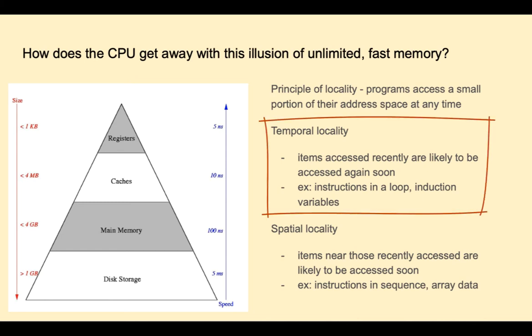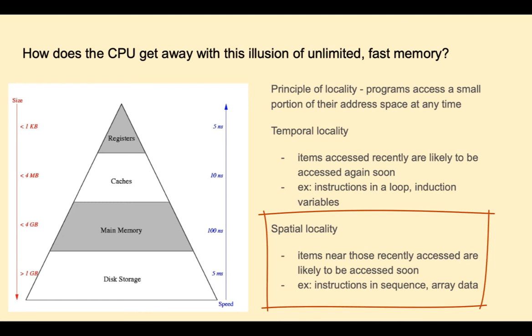Temporal locality is the observation that items that were accessed recently are likely to be accessed again soon. An example are instructions within a loop or induction variables. An induction variable is a variable that gets increased or decreased by a fixed amount on every iteration. Spatial locality is the observation that items near those recently accessed are likely to be accessed. For example, instructions in sequence or array data.